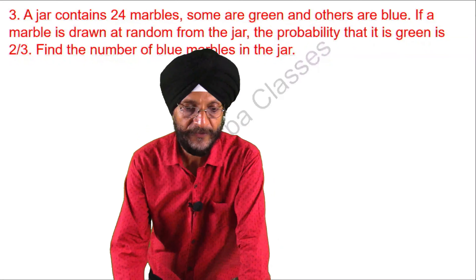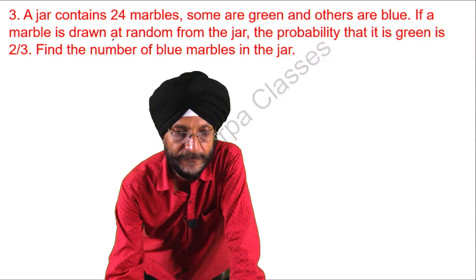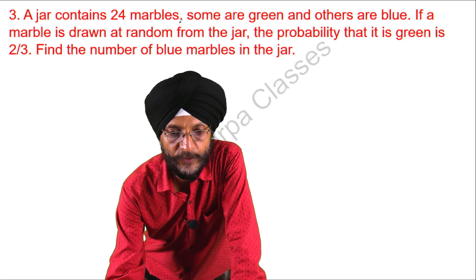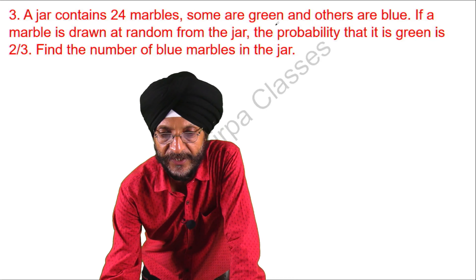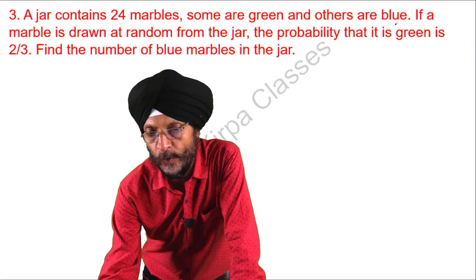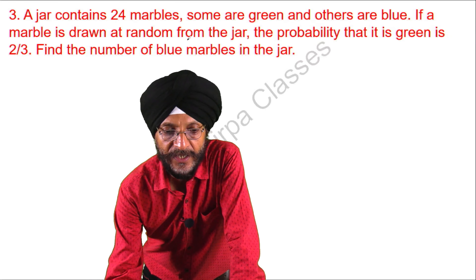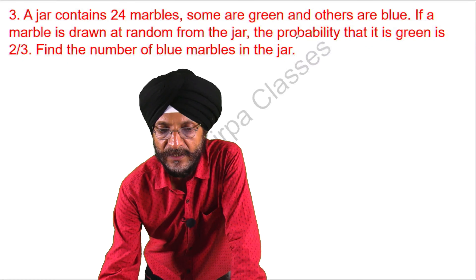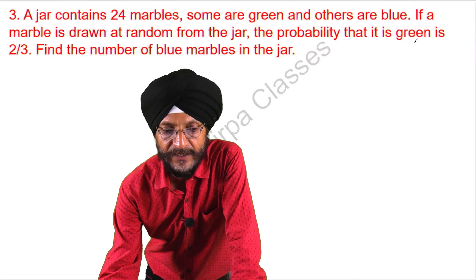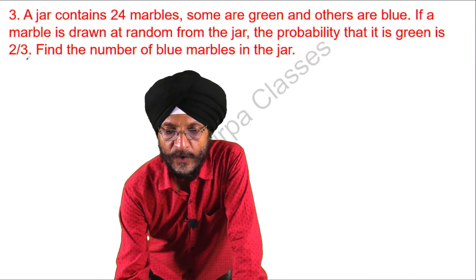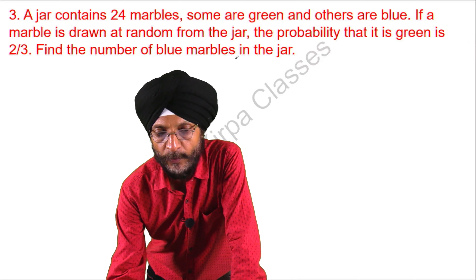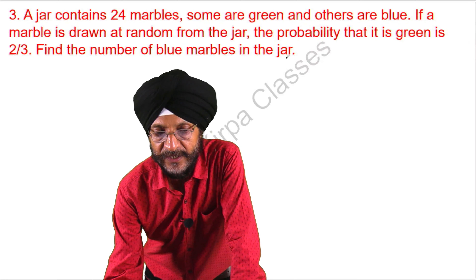The question before us is: a jar contains 24 marbles, some are green and others are blue. If a marble is drawn at random from the jar, the probability that it is green is 2 over 3. Find the number of blue marbles in the jar.